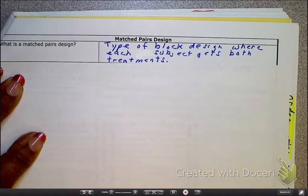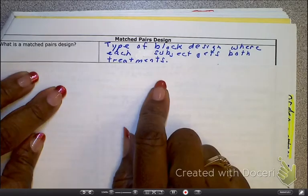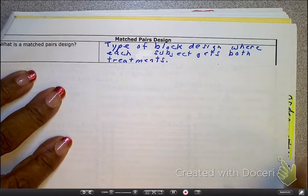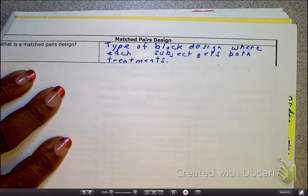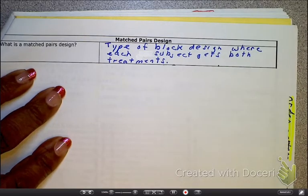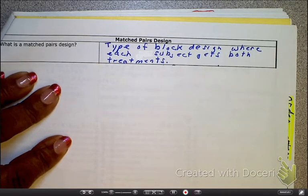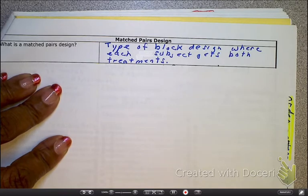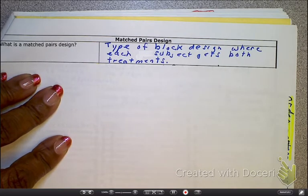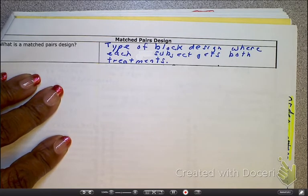Now, what is a matched-pair design? So a matched-pair design is a special type of block in which the subjects get both treatments. So let's talk about a type of block design first.